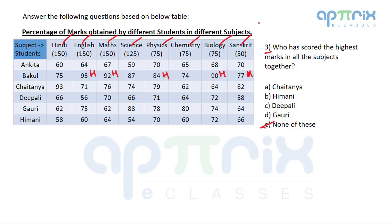Out of 8 subjects, Bakul is scoring the highest in 4. Looking at his other marks: 75 is second highest in Hindi, 87 is very close to the highest in another subject, 74 and 77 are also second highest in their columns. So Bakul is highest in 4 subjects and second highest in the other 4. No other student can match this, so by visual observation alone the answer is 'none of these' — no need for full calculation.